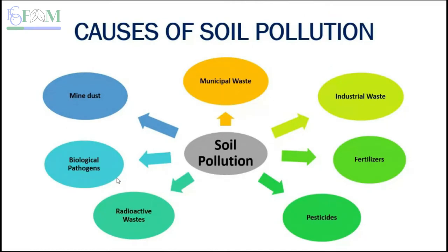Looking at a diagram of causes: the first is municipal waste — garbage generated at home. Every household generates around 1.4 to 2 kilograms of solid waste per day in urban areas, slightly less in rural areas. The next cause is industrial waste — chemicals and wastewater from industries. Other causes include fertilizers and pesticides from agriculture, radioactive waste, and mine dust.